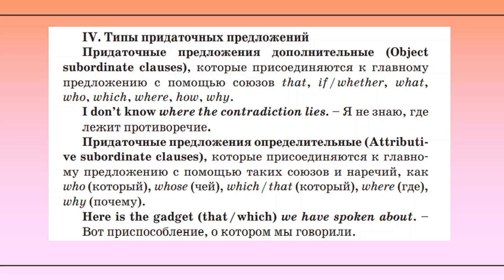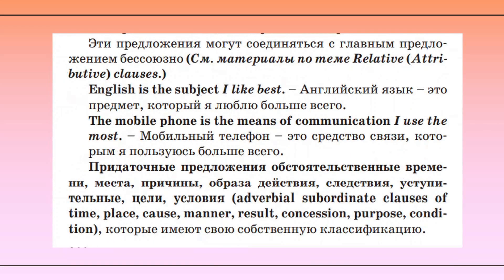Придаточные определительные (attributive subordinate clauses) присоединяются к главному предложению с помощью союзов и наречий: who (который), whose (чей), which, that (который), where (где), why (почему). Например: Here is the gadget that/which we have spoken about — вот приспособление, о котором мы говорили. Эти предложения могут соединяться с главным предложением бессоюзно. Например: English is the subject I like best — английский язык — это предмет, который я люблю больше всего. The mobile phone is the means of communication I use the most — мобильный телефон — это средство связи, которым я пользуюсь больше всего.